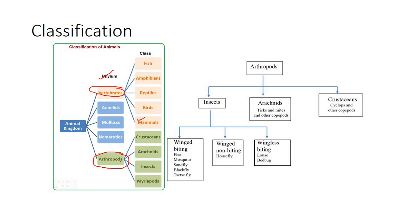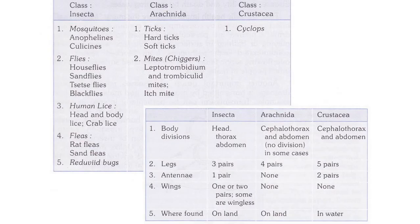Medical entomology is the study of arthropods of medical importance. These arthropods are the vectors of disease — mark my words, vectors, not the causative agents. These are species which transmit diseases. The housefly transmits disease by a mechanical route, while other vectors transmit biologically, meaning the agent undergoes multiplication or change in form within their bodies.